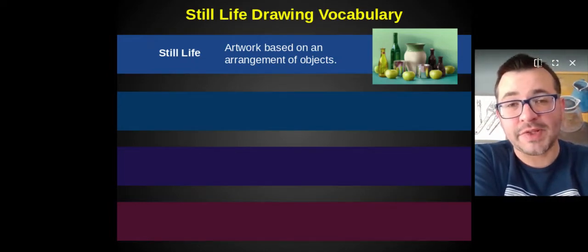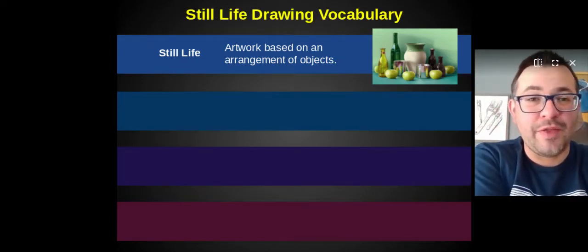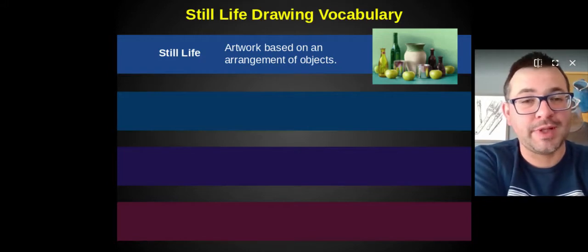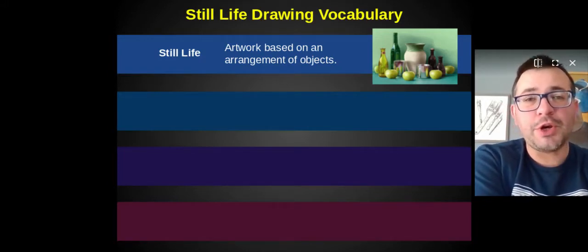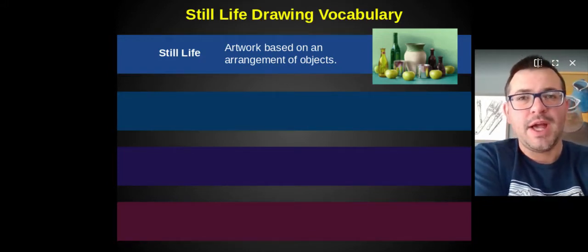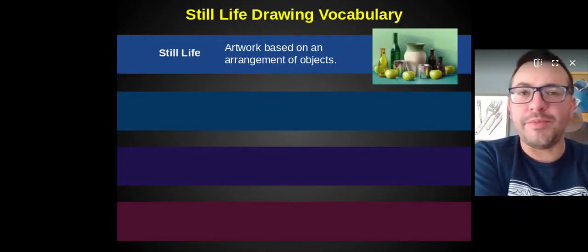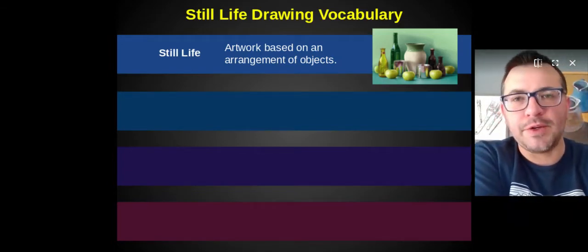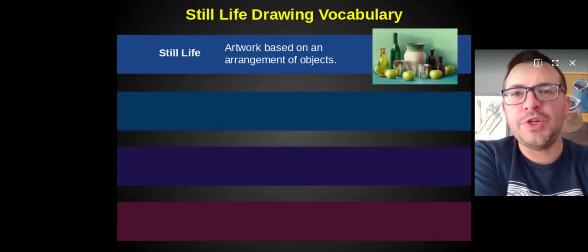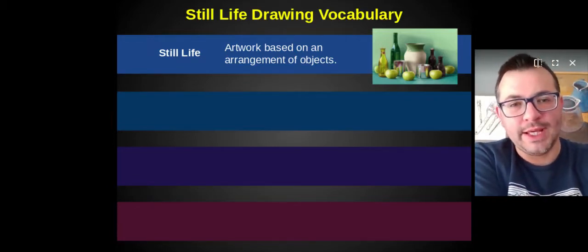You can really use any objects in your still life that you want, whether it's vases, bottles and fruit like the one on the screen, but it could be toys, food objects, plants, kitchen utensils, tools, it doesn't really matter.